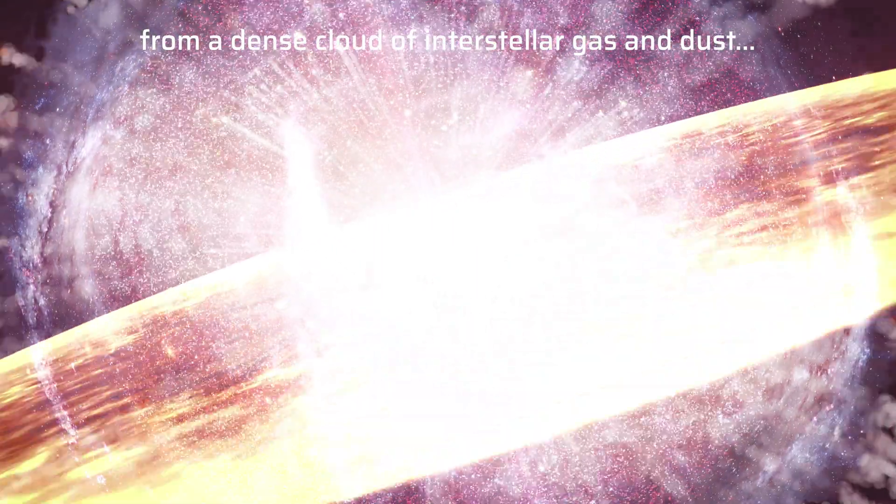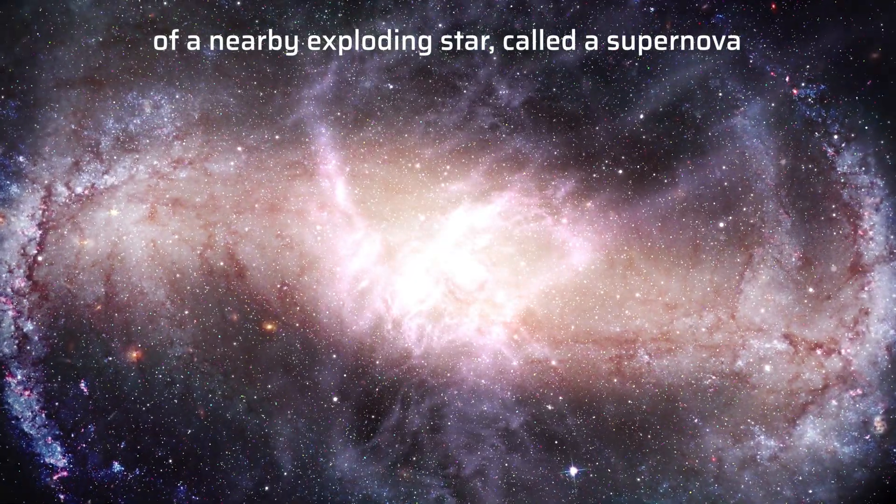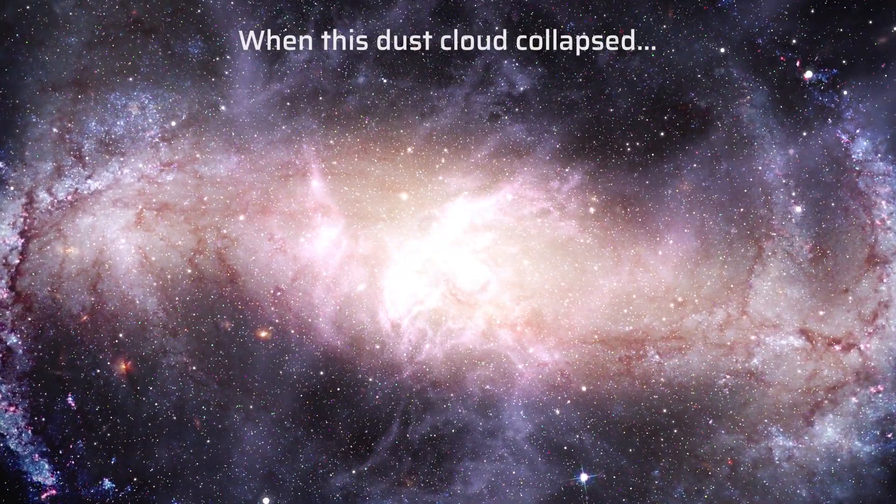Our solar system was formed 4.5 billion years ago from a dense cloud of interstellar gas and dust of a nearby exploding star, called a supernova, when this dust cloud collapsed.